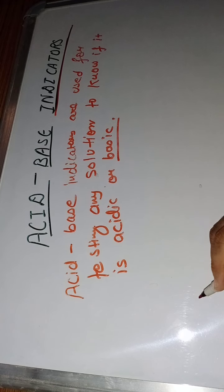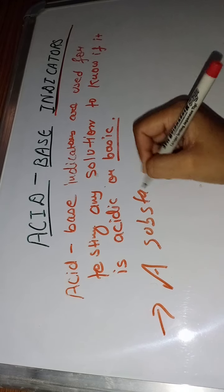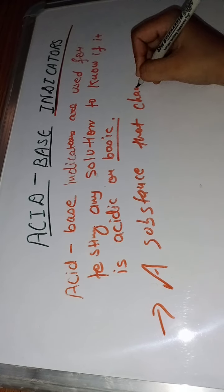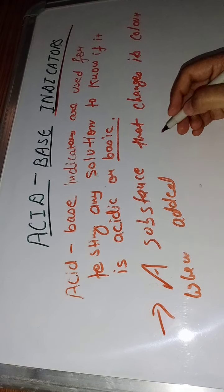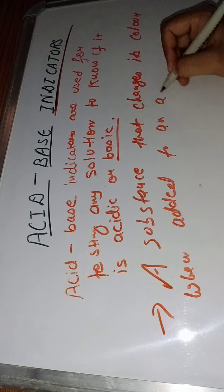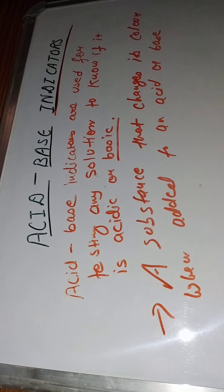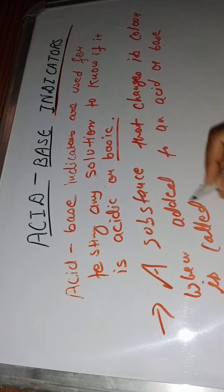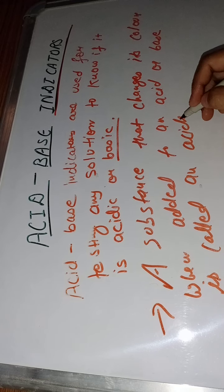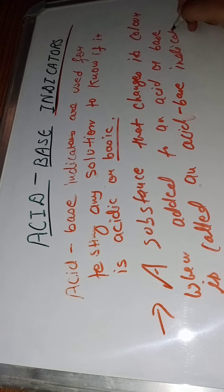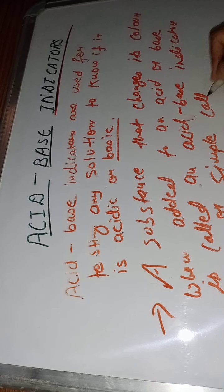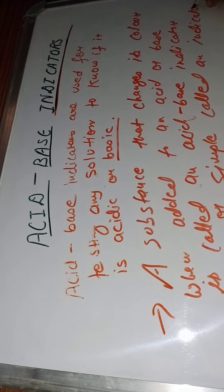Here we talk about indicators. A substance that changes its color when added to an acid or base is called an acid-base indicator, or simply called an indicator. So, here is the definition and meaning of indicators.